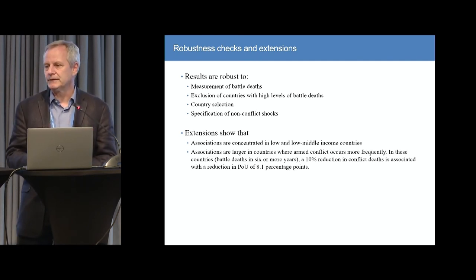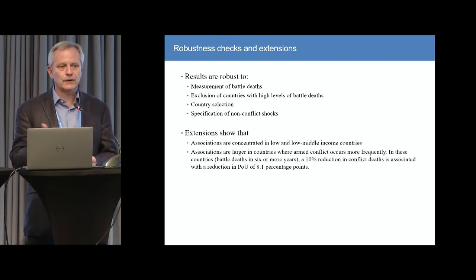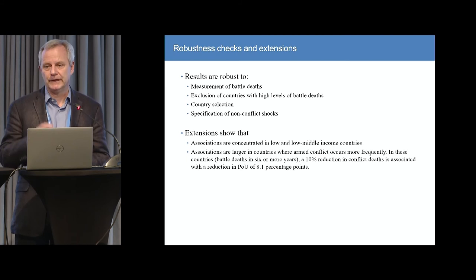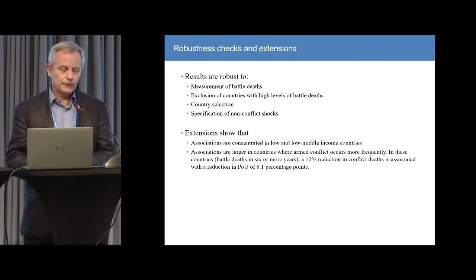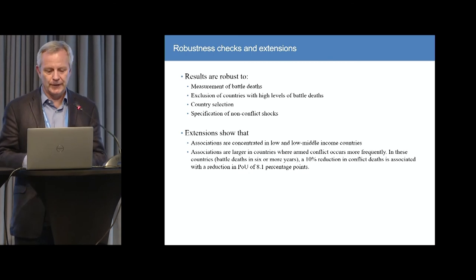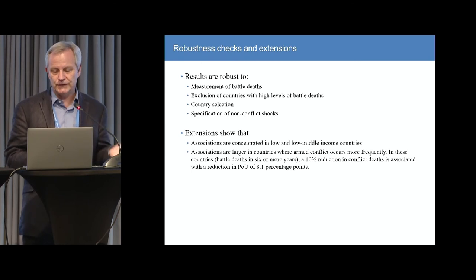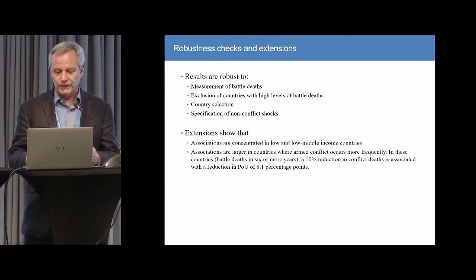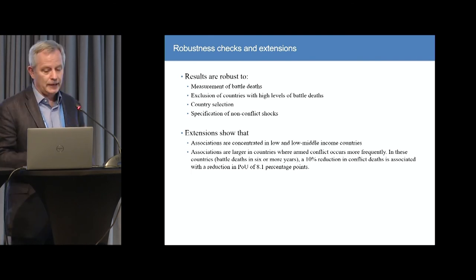It's worth mentioning that the sample consists of low, lower-middle, and upper-middle income countries. When we look within those groups, the effects are concentrated in the low and lower-middle income countries; in upper-middle income countries the associations are much weaker. Also, if we disaggregate by frequency of armed conflict over this period, for countries where battle deaths occur in six or more years over the 19-year period we see a larger association — a 10 percent reduction in conflict deaths is associated with a reduction of 8.1 percentage points in the prevalence of hunger.